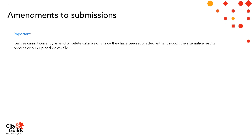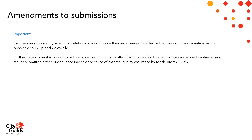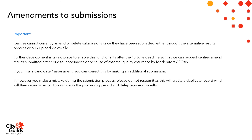A few important points about grade submissions. Centres can't currently amend or delete submissions once they've been submitted, whether through the alternative results process or through the bulk upload via CSV file. Further development is taking place to enable this functionality after the 18th June deadline, so we can request centres amend results submitted due to inaccuracies or as a result of external quality assurance by moderators or EQAs. If you miss a candidate or assessment, you can correct this by making an additional submission. However, if you make a mistake during the submission process, please don't resubmit, as this will cause a duplicate record and an error, which will delay the processing period and the release of results. If you have any issues, please contact the quality delivery team.